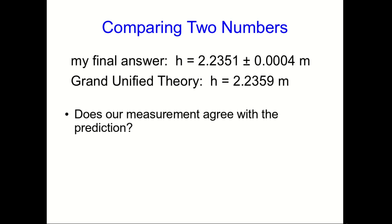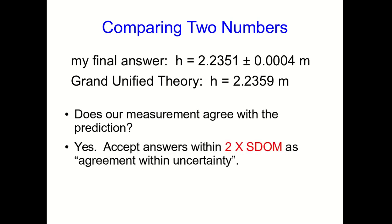Except remember that that uncertainty there is a typical variation. And by typical we actually mean only about two times in three. About 19 times in 20 we're going to see an answer within about two standard deviations of the mean, or 0.0008. And so we actually would accept this as agreement, because it's within two SDOMs.